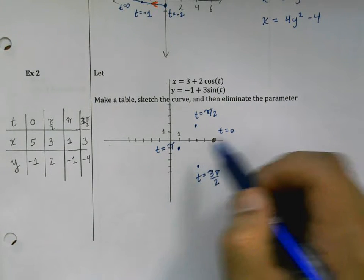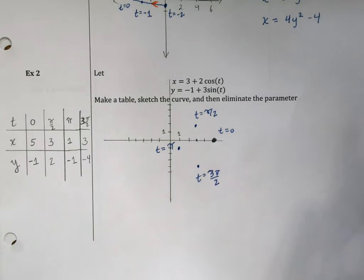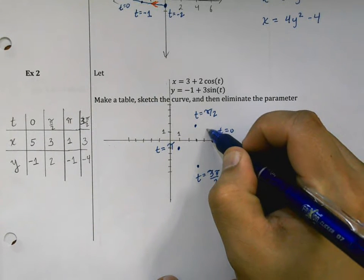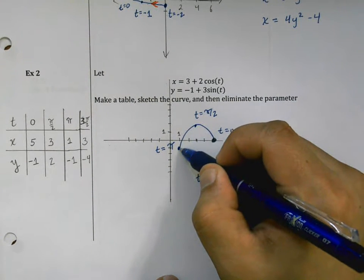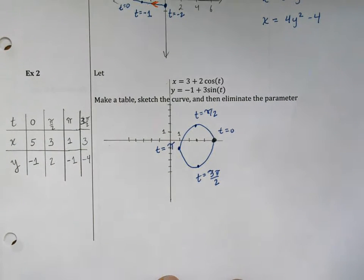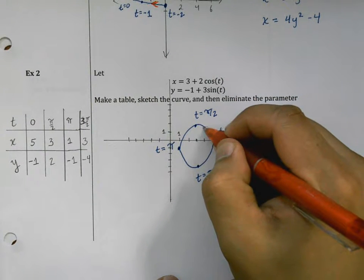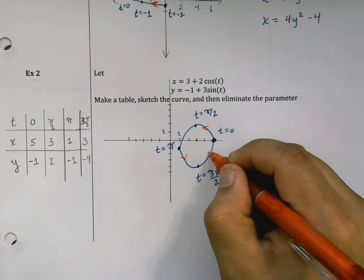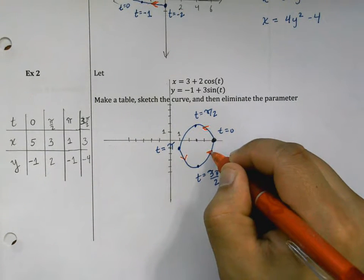Once I plot those points along with the t values at each of those points, this is the picture that I have. You can see that this curve, if you start out as t equals zero, goes in this direction. It looks something like that. It's not quite a circle and we'll see why it's not in a minute.